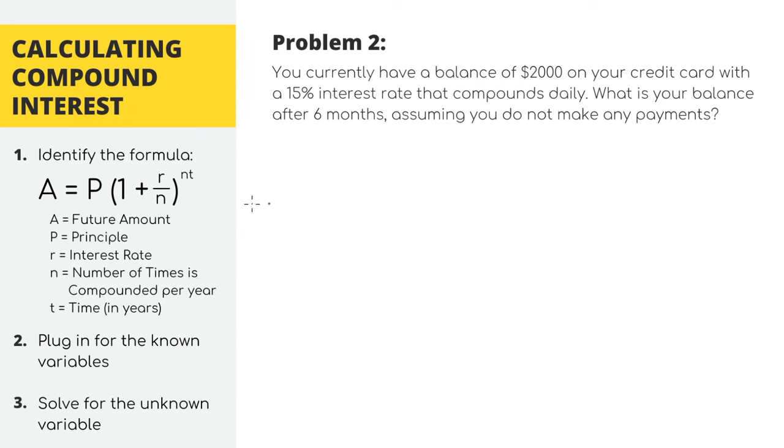We can use our compound interest equation to get the answer. We're trying to solve for A, which is our future amount. P equals $2,000 because that's the initial amount we charge to the credit card.